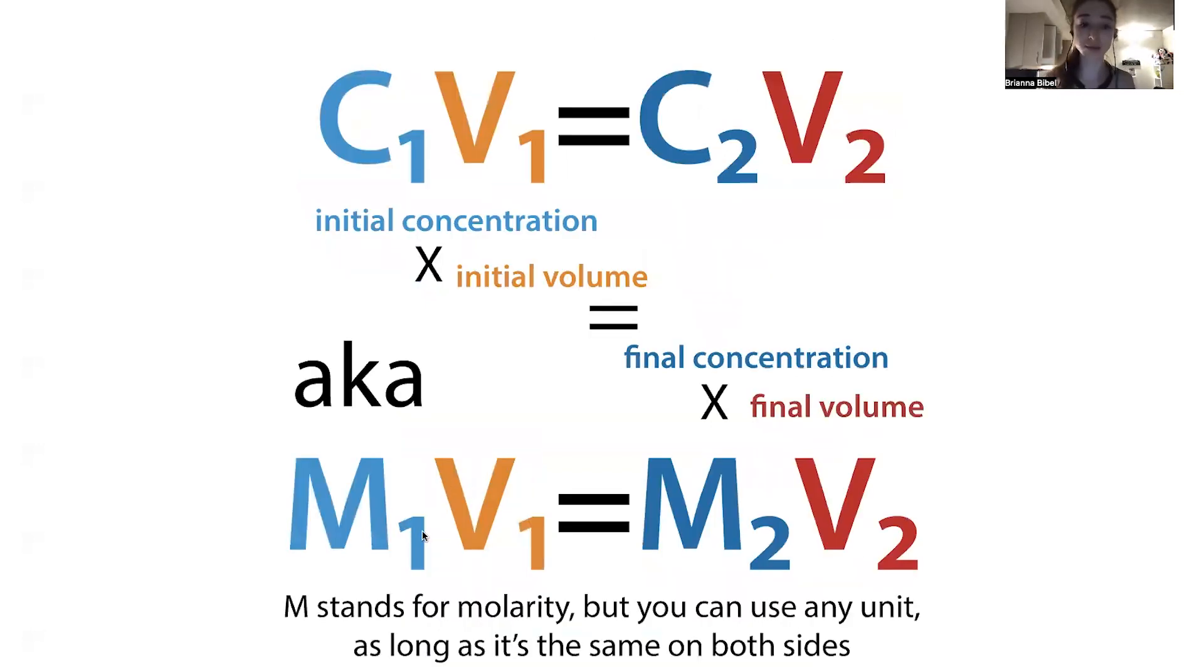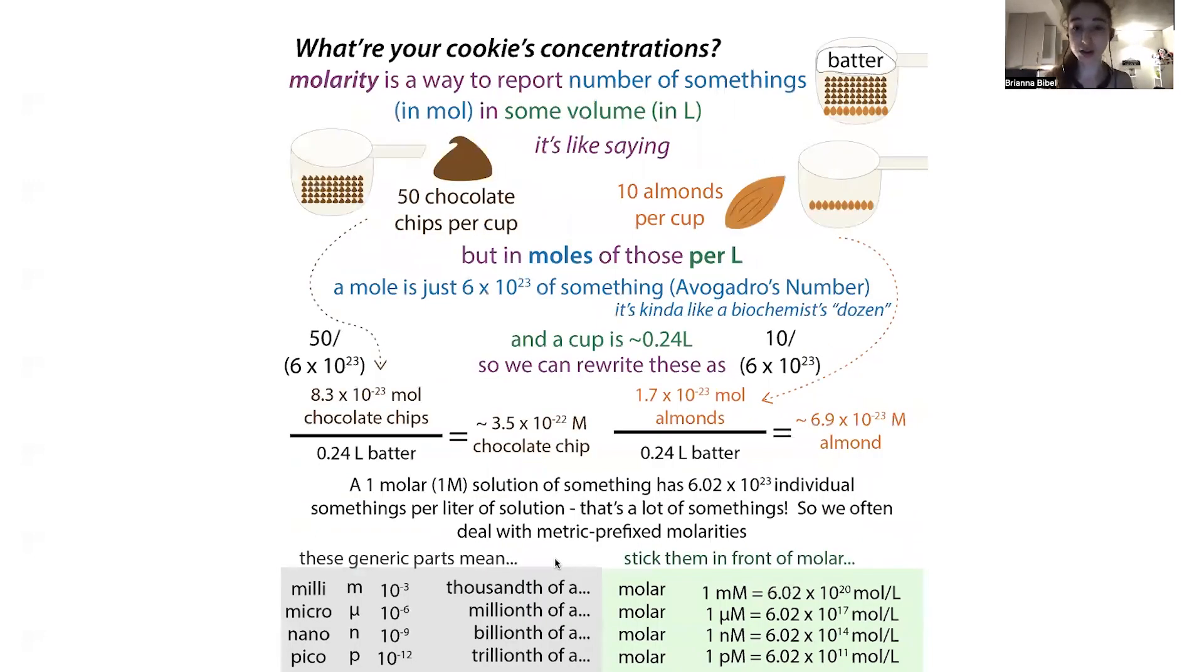Molarity is where the M comes from when you see this formula written as M1V1 equals M2V2, which is actually how I learned it. Molarity is just a unit of concentration, and we use it a lot in biochemistry because it talks about the number in terms of number of copies of things. A mole is like the biochemist's dozen, except instead of 12, it's 6 times 10 to the 23rd copies of something. When we say a one molar solution, that means we have 6 times 10 to the 23rd moles of that thing in a liter.